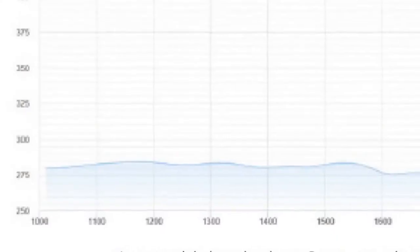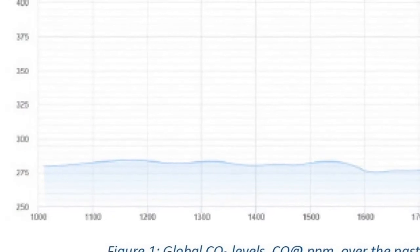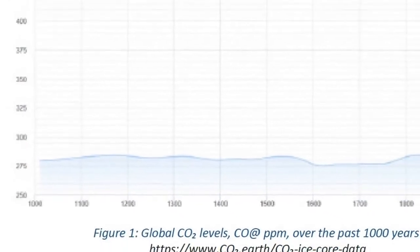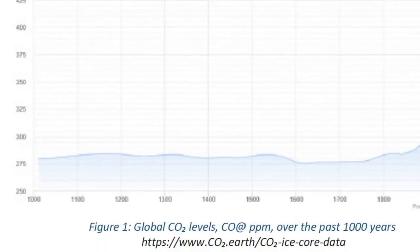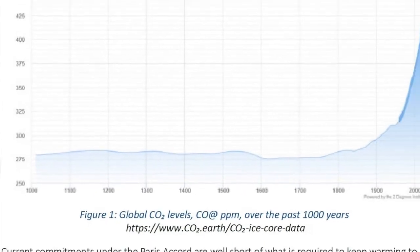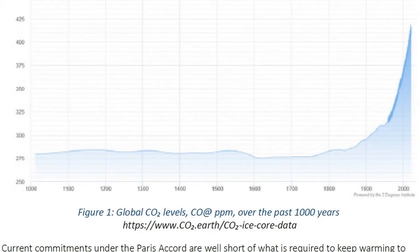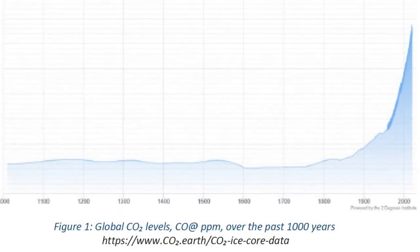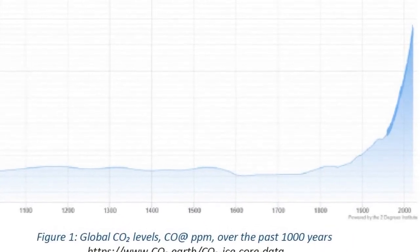If we go back into the record and look at CO2 levels in terms of parts per million by volume, we can see in the pre-industrial era it's around 280 to 290 parts per million by volume. What we have now today in 2020 is around 415. And at the rate it's going, it's certainly going to be well over 500.